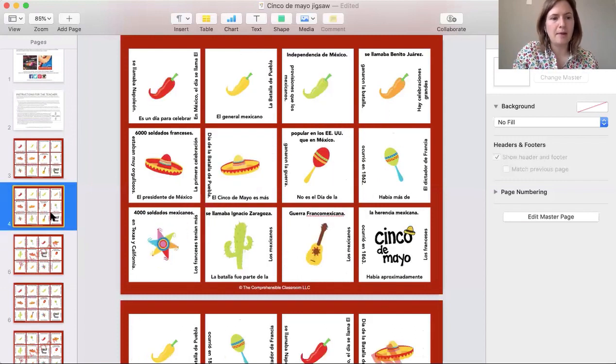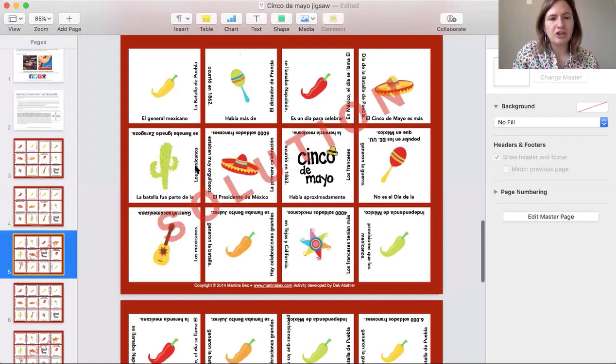The students have to see all these different squares and they have to arrange them so that the sentences match up. For example, it says the Battle of Puebla occurred in 1862. When they read this and this, they match up across the line. The Mexican general was named Ignacio Zaragoza. There were more than 6,000 French soldiers.